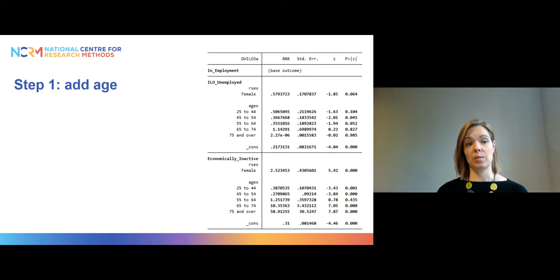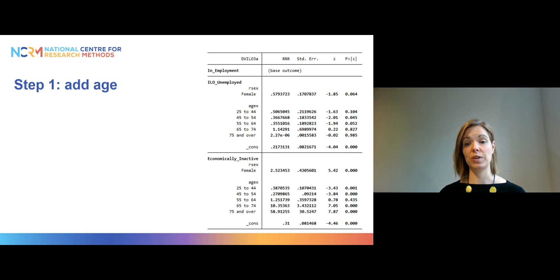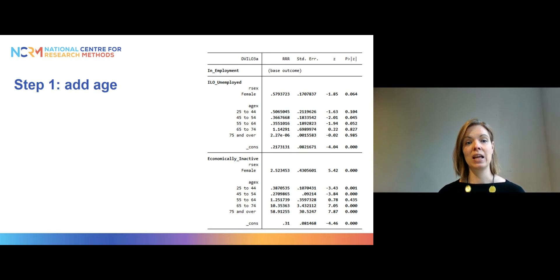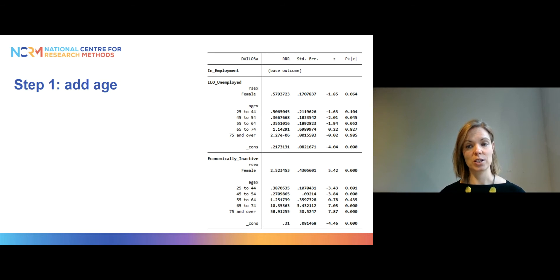Let's start building our model on the basis of the first model from part one, where we had added gender and nothing else. Let's start by adding categorical age. Our reference category is the youngest category, 16 to 24, because that doesn't appear in the results. These results are from Stata — if you use R or SPSS or some other program it might look slightly different, but the information you get should be more or less the same.